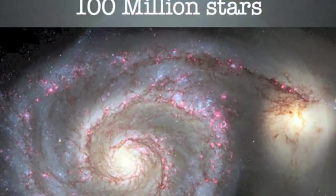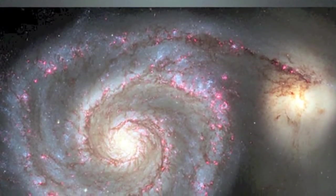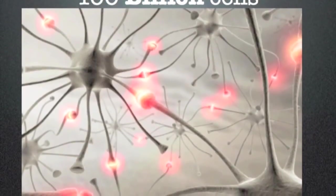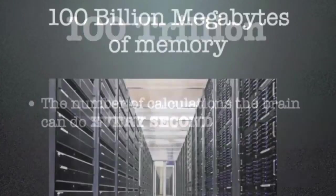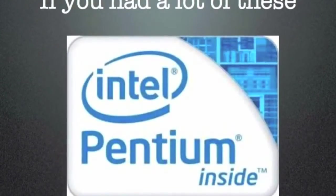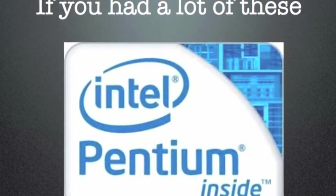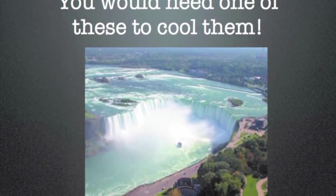A typical galaxy will have a hundred million stars. Your brain has a hundred billion brain cells. Those brain cells compute a hundred trillion calculations every second, and your brain has a hundred billion megabytes of memory. For a series of standard Intel processors to carry out the work of the brain, they would need the cooling capacity of the entire output of Niagara Falls directed on them.